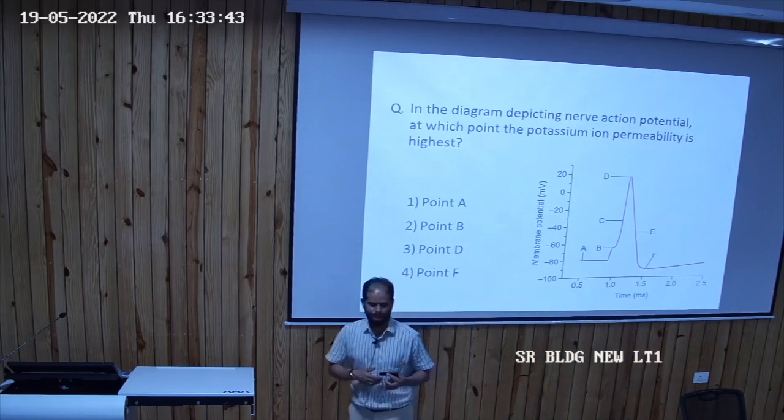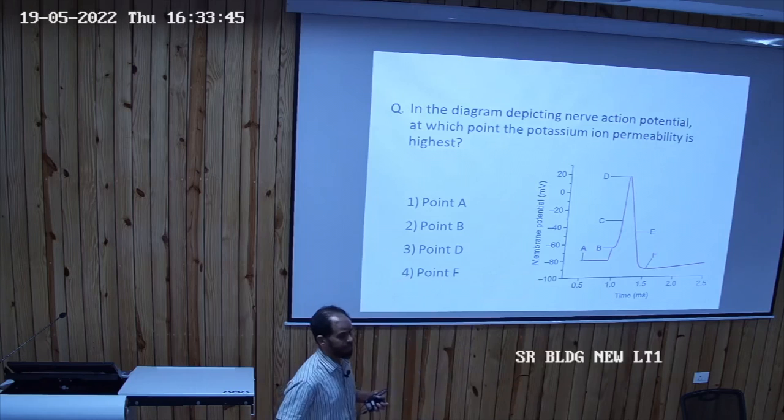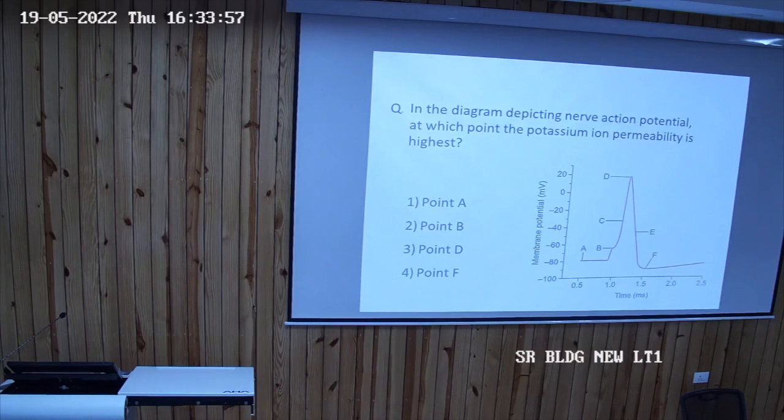After this we will wrap up. Can you tell about all these points and what is the ionic basis of this graph? This is the diagram of action potential, you know? Nerve action potential.